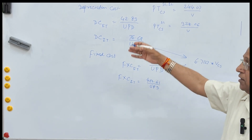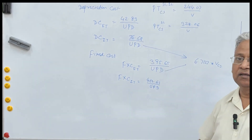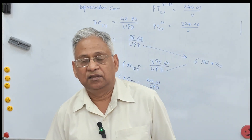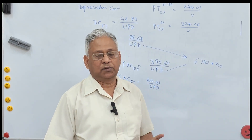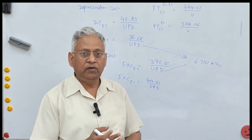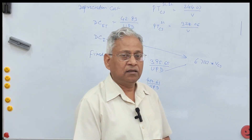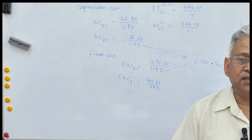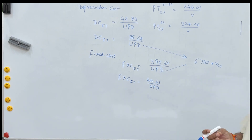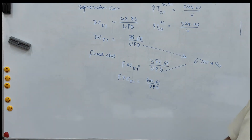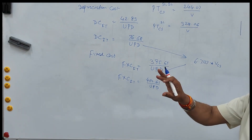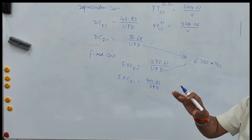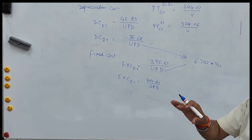A similar set of equations is given in IRC SP 30 2019 for other categories of vehicles also — for two wheelers, big car, heavy vehicles, buses, LCV, and multi-axle trucks. Depending upon the traffic composition on the road, you can find out what would be the total vehicle operating cost.